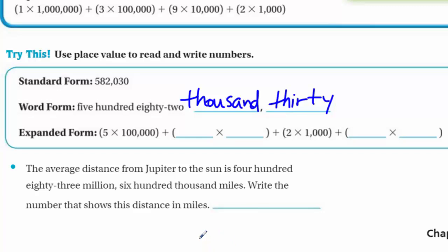Now expanded form. 5 times 100,000 plus. Now look at the next place value. We're going to be going into the 10,000th place. So we're definitely going to put the digit that's there, which is the 8. So we put 8 times 10,000. The 2 times 1,000 is already there. Now the next place value is hundreds, but we don't have anything there, so we ignore that. But we do look at the 3, and the 3 is in the, that's right, the tens place. So we just simply put 10 because that 3 digit times the 10 is going to give us the 30.